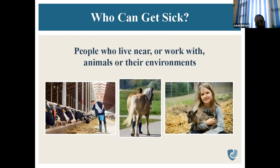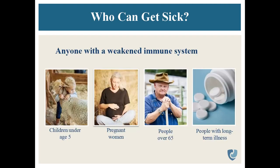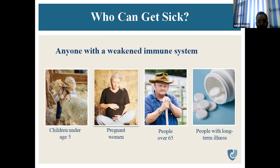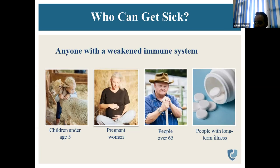Who can get sick? People who live near or work with animals or their environments are the most vulnerable. Anyone with a weakened immune system is at risk. The most common groups are children under age five, pregnant women, people over 65, and people with long-term illness — for example, AIDS or cancers — who have depressed immunity and are more prone to zoonotic disease.